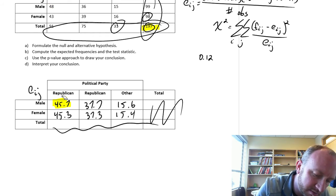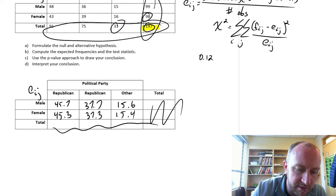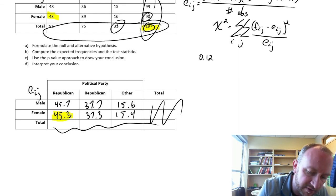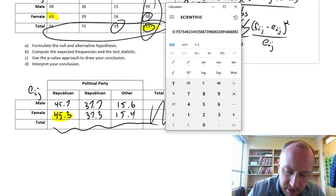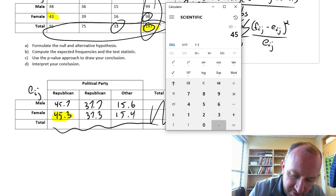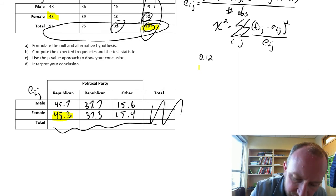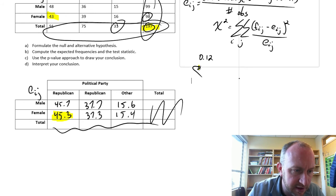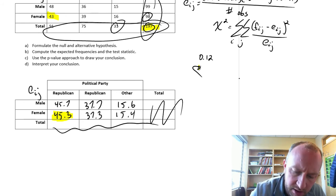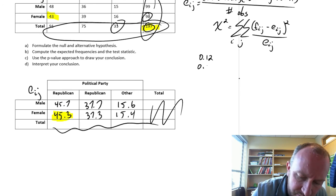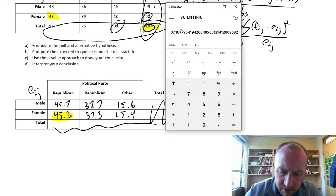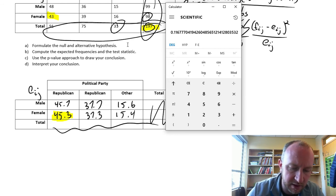Now the next one, we'll look at the women. That's 43 and 45.3. So 43 minus 45.3 squared, divided by the expected value 45.3, which is 0.116. Let's round that to 0.12 as well.